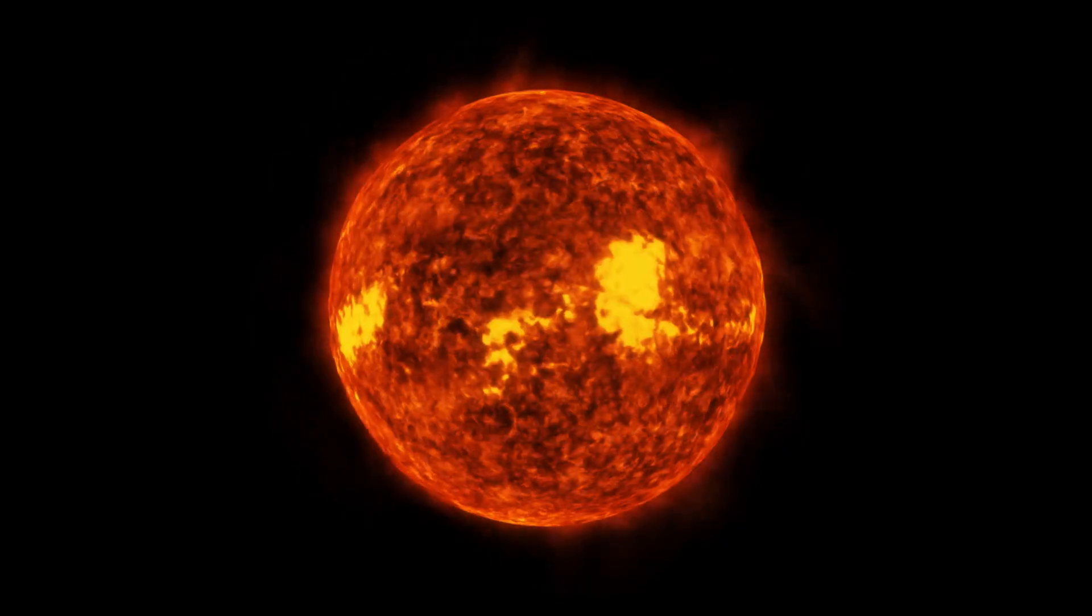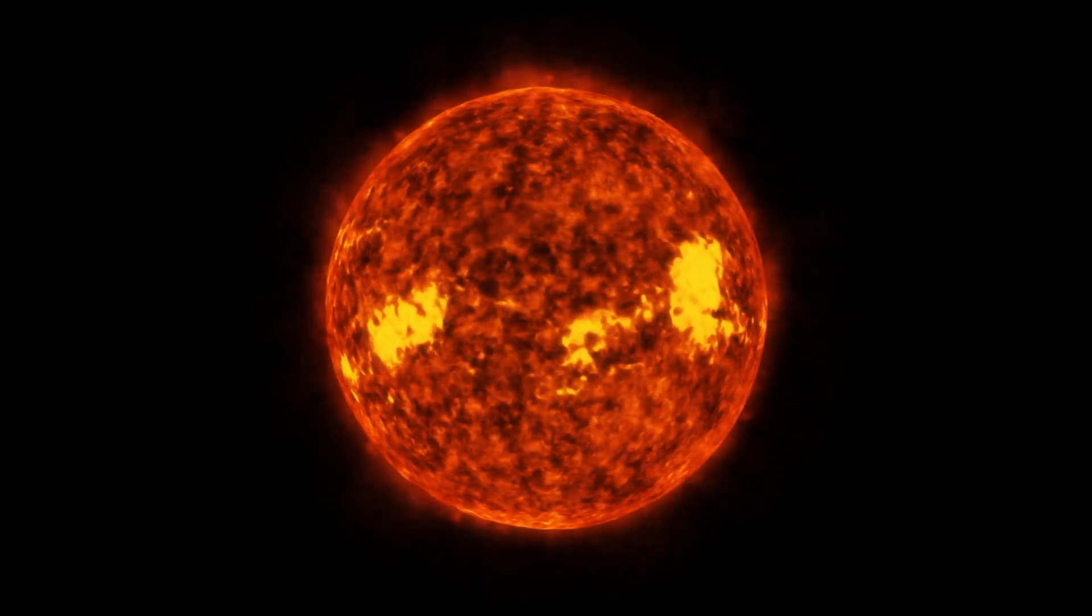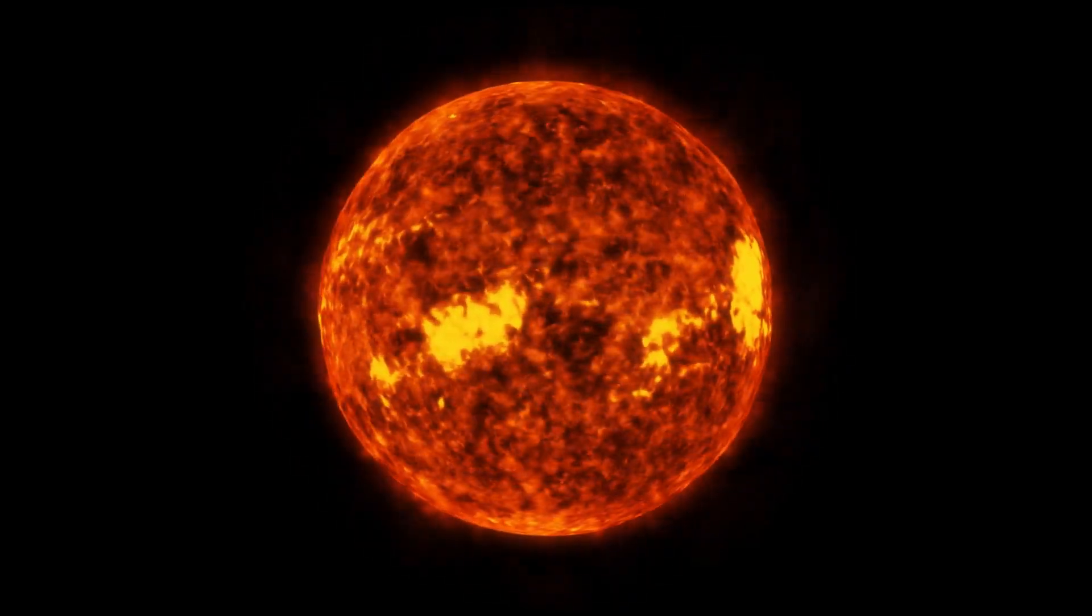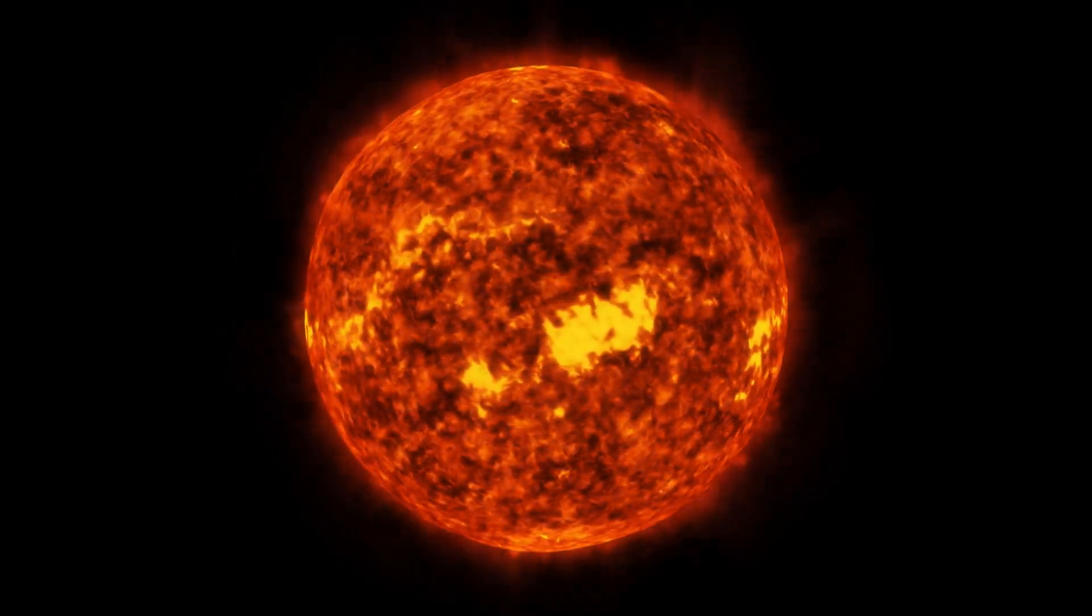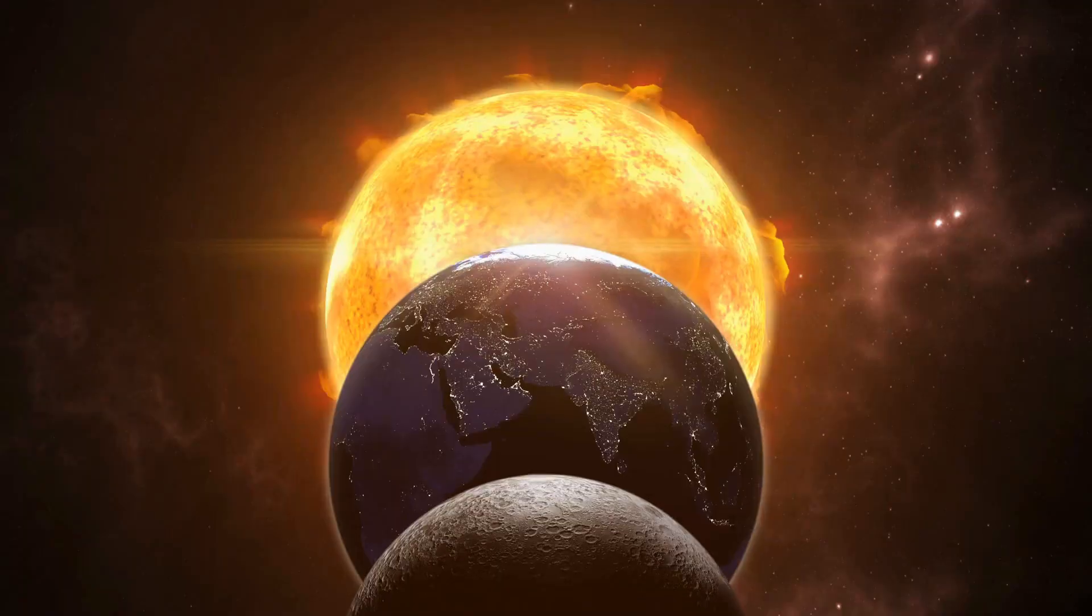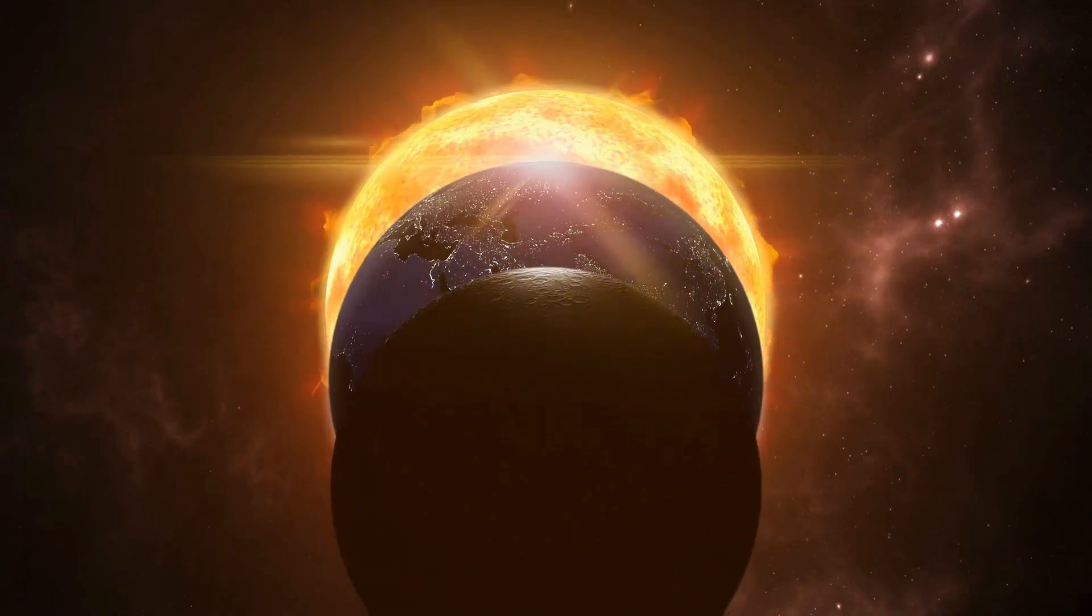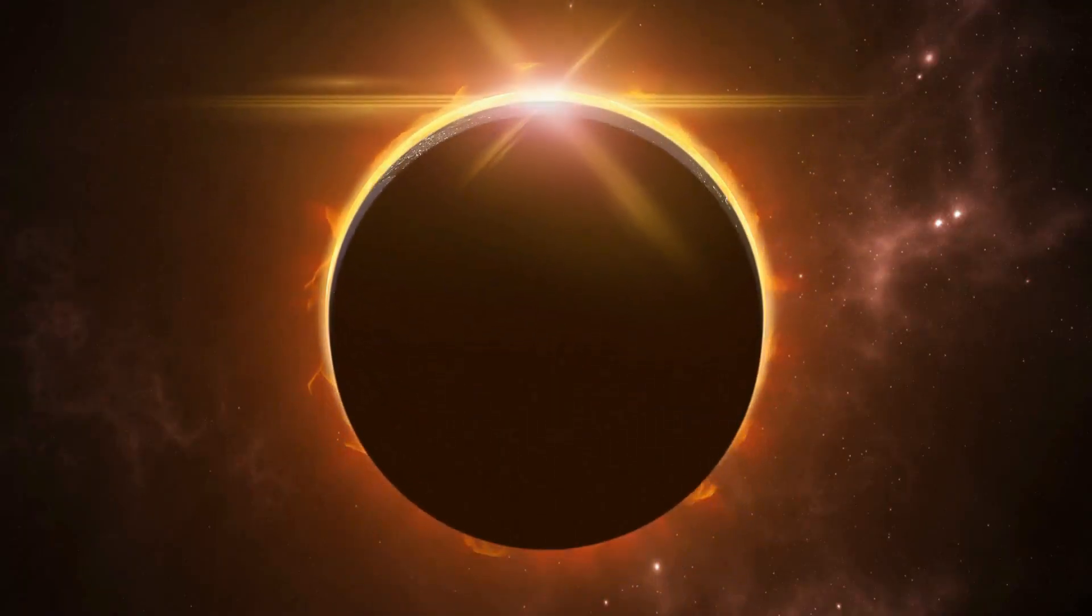Sunspots are temporary dark spots on the Sun's surface caused by magnetic activity, and solar flares are sudden, intense bursts of radiation. Coronal mass ejections are massive explosions of solar plasma and magnetic fields from the Sun's corona.